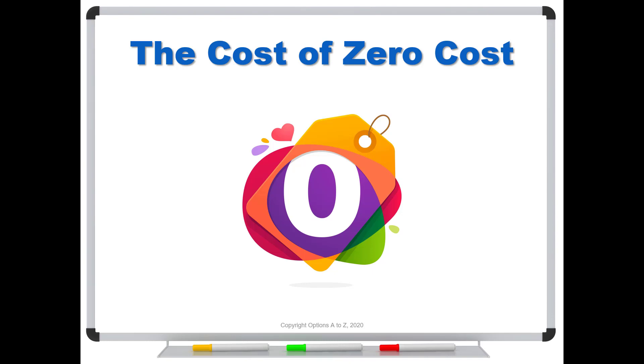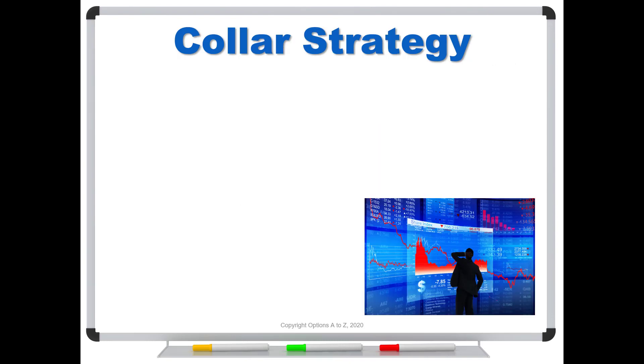What is the cost of a zero-cost collar? Let's take a look. Just remember that the collar strategy means you're going to buy shares of stock—100 shares. You're going to sell a call and then take the cash from that sale and buy a put. That's your insurance policy.